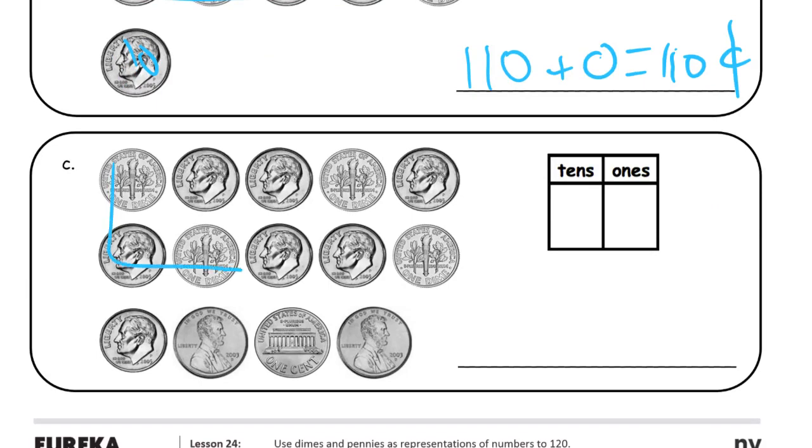And now here we have the same thing. We have 10 10s right there, and then we have one more, that's 11 10s. But now we have 1, 2, 3 pennies, so 3 1s. So we have 110 cents in dimes, in 10s, plus the 3 cents we have in pennies. That's 110, 111, 112, 113. That's how you write it, 113 cents.